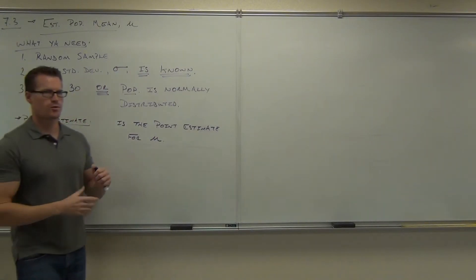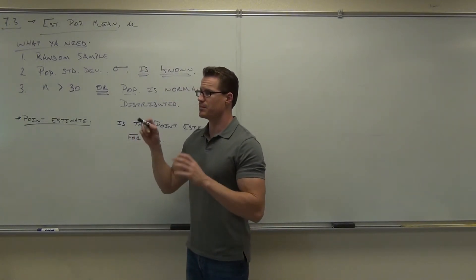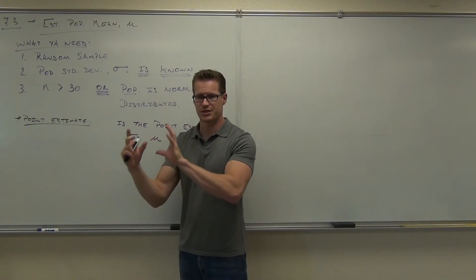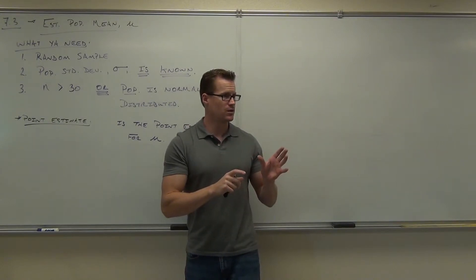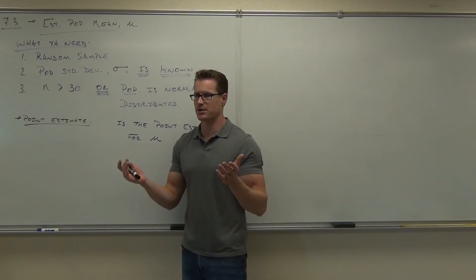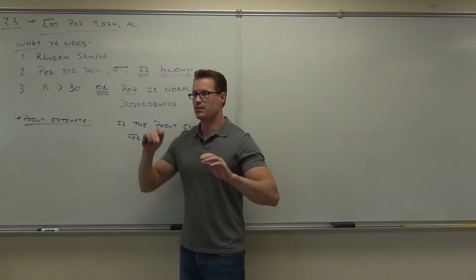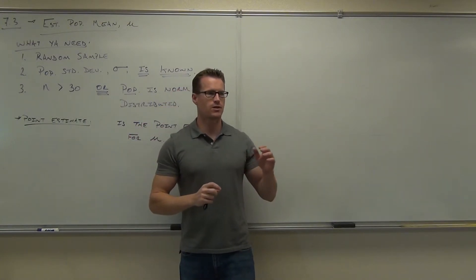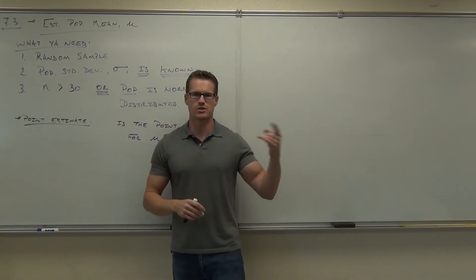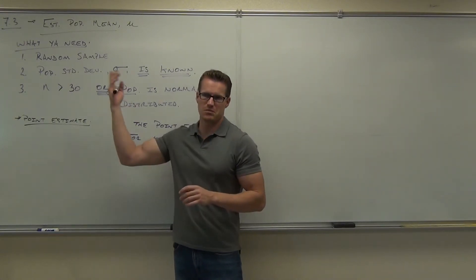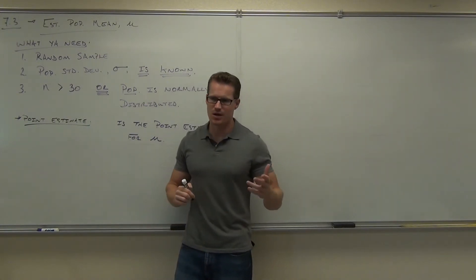P-hat was the point estimate for P because p-hat came from a sample and P was from the population. What you're trying to do is get a statistic from a sample that's being used to represent the population. You absolutely must know what a point estimate is. A point estimate is one single value being used to represent a population proportion, population mean, or some other population value.